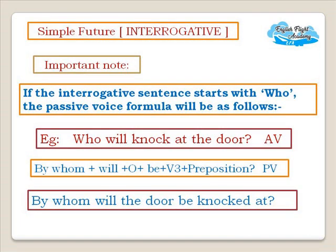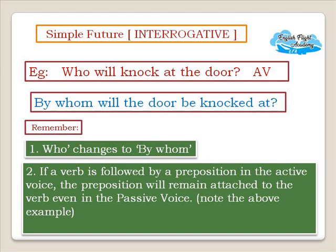For simple future interrogative sentences that start with 'who,' the passive voice formula is as follows. Active: 'Who will knock at the door?' Passive formula: By whom + will + Object + be + Verb 3 + preposition. Result: 'By whom will the door be knocked at?' Note that 'who' changes to 'by whom,' and if a verb is followed by a preposition in active voice, the preposition remains attached to the verb in passive voice as well.